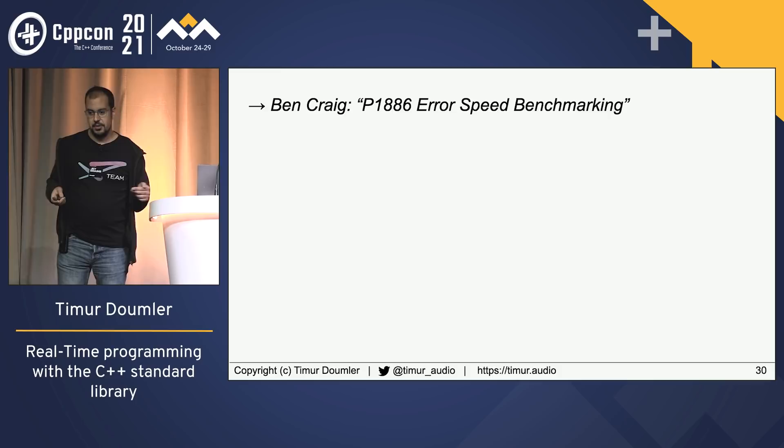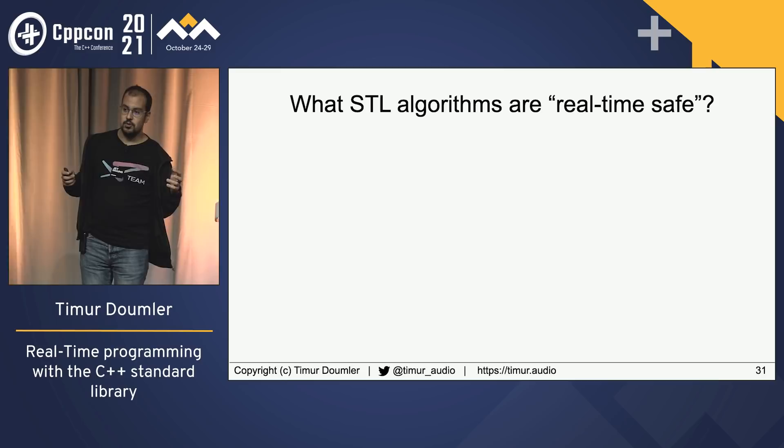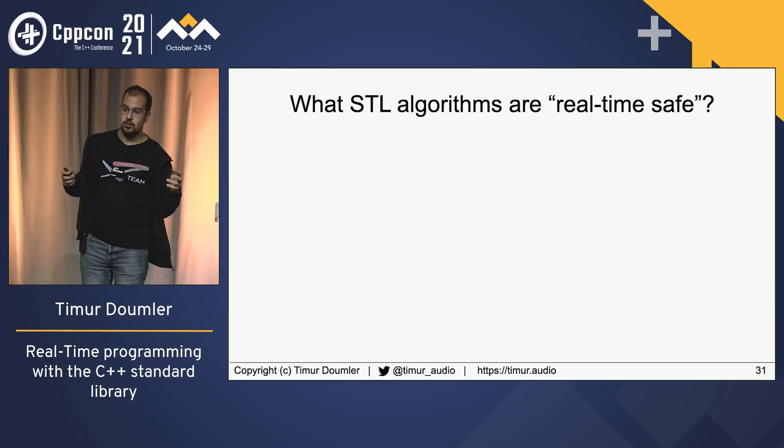If you want to know more about the performance overhead of exceptions, there is a paper by Ben Craig that I recommend. Let's talk about STL algorithms. What STL algorithms are real-time safe? Is std::sort real-time safe? Is std::rotate real-time safe?